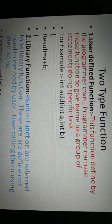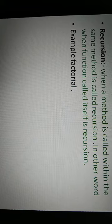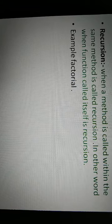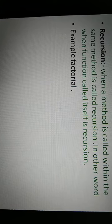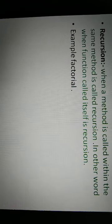When you call a method within itself, this is called recursion. A function calling itself is recursion. For example, factorial: 4 factorial equals 4 times 3 times 2 times 1. This is factorial recursion.